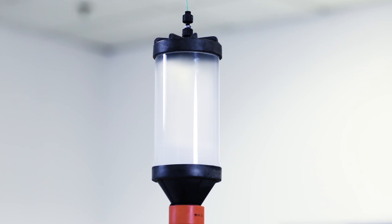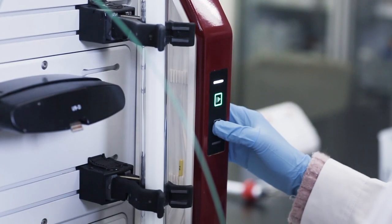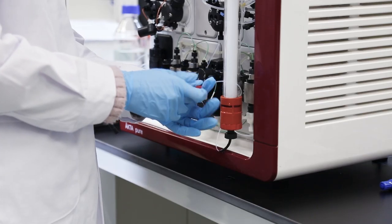When the bed height is stable, mark the level of the resin bed. Stop the pump and place the stop plug at the bottom of the column. Remove the column from the stand.